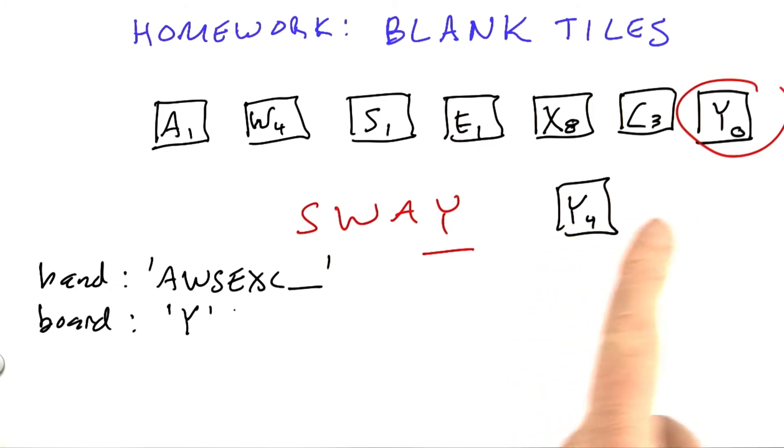And on the board, when you finally decide what you're going to play, let's say you decide that the blank is going to be represented by a y, we're going to represent that as a capital letter Y, because once it's played, it fully takes on the effect of the letter it replaces. So somewhere from going to the hand to going to the board, the blank changes from an underscore to a capitalized letter. But in between, it's up to you.